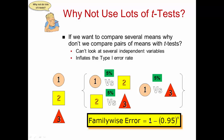That family-wise error rate can be determined by 1 minus 0.95 to the nth power, the n being how many groups you have. The 0.95 is the complement to the 0.05 level of significance — the probability of not making an error is 0.95. So if we raise 0.95 to the third power and subtract from 1, we'd have about a 14.3% error rate, which is unacceptable when we're shooting for a 5% overall error rate. That's just with three groups. Imagine if you had 10 groups — we would have about a 40% chance of error.